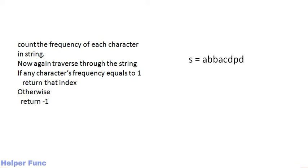A better approach is: first count the frequency of each character in the string, then traverse the string again. If any character has a frequency of 1, it is unique and we return its index. If no character has frequency 1, the string has no unique character and we return minus 1.